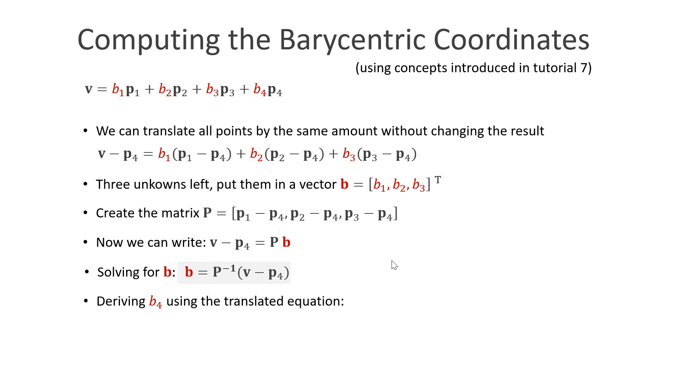Now we only have the first three barycentric coordinates. To derive b4, we use the translated equation here. If we move p4 to the other side and multiply out these terms, we get this form here. As you can see, the scalar in front of p4 is 1 minus b1 minus b2 minus b3, which is b4.